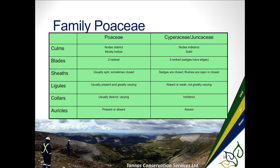In grasses, you're looking at nodes, which are distinctive — that hard bump on the flower stem going up, with the internode as the large expansion area in between. In Cyperaceae and Juncaceae, nodes are indistinct. When looking at blades, you'll have two-ranked arrangement in Poaceae versus three-ranked in sedges, and Juncaceae won't show three-ranked either.